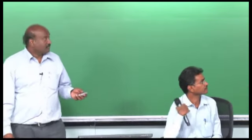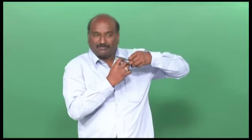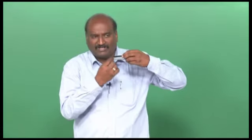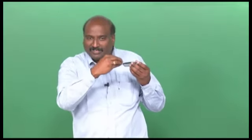Gas groups are classified into three: 2A, 2B, and 2C. 2A includes propane, 2B includes ethylene, and 2C includes hydrogen. There is a reason for specifying gas groups — related to the maximum experimental safe gap (MESG). When you design an equipment enclosure, you cannot say it is completely sealed. There is always a gap of less than 1 mm or 0.5 mm, and for a vapour, this gap is more than sufficient for it to enter inside. That is what is called the safe gap for those products.